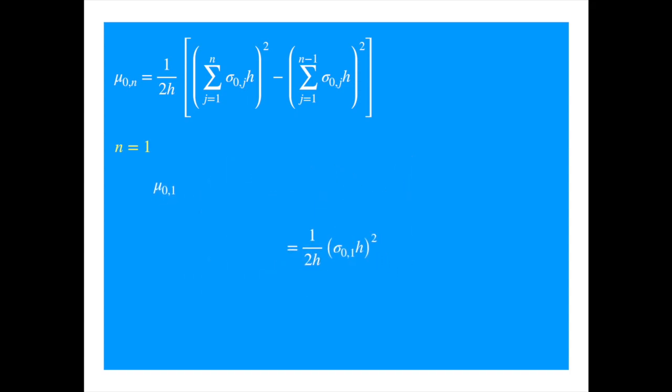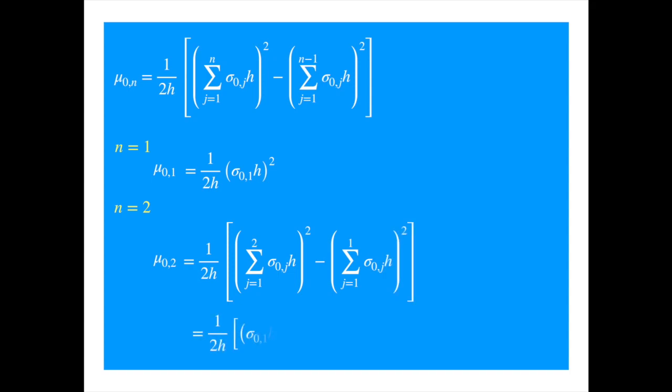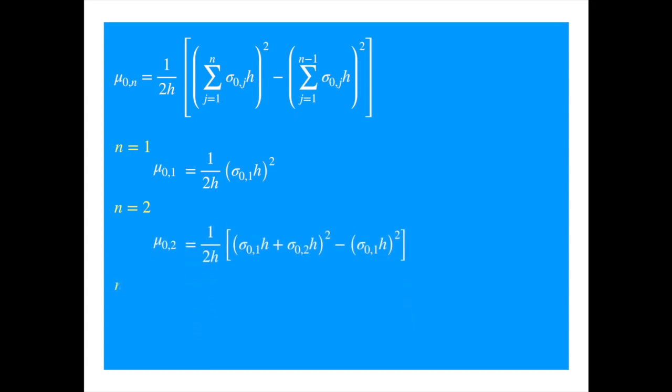Now we substitute two for n's. So the first summation has two terms now, and the second summation has one term. And we can infer what it would look like for n equal to 3, and so on.